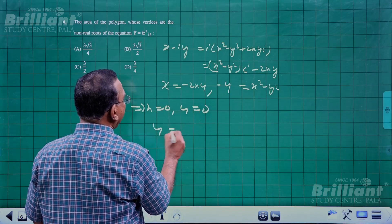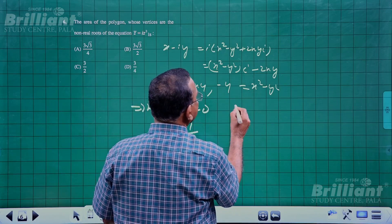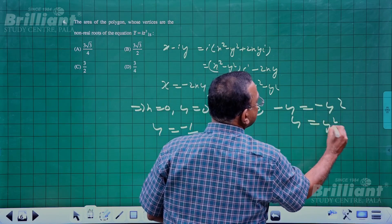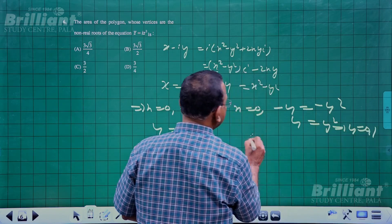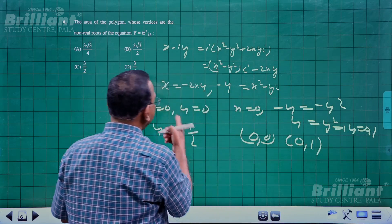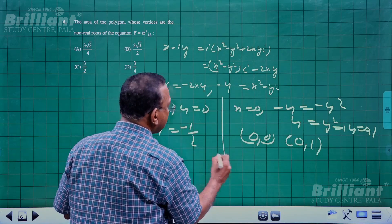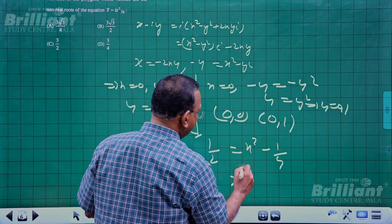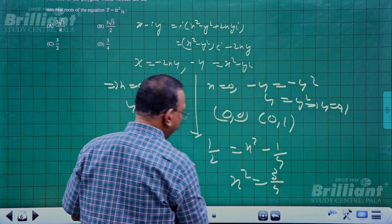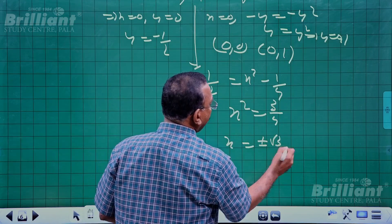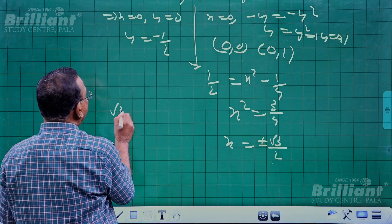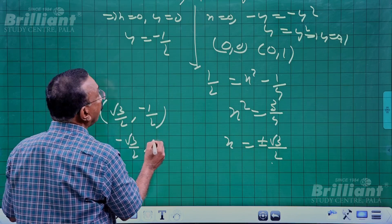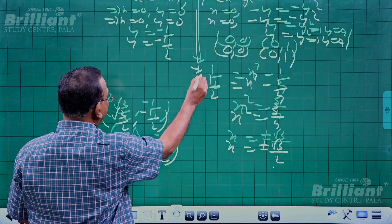From x = -2xy: x = 0 or y = -1/2. When x = 0: y = y² gives y = 0 or y = 1, so points (0, 0) and (0, 1). When y = -1/2: x² = 3/4, giving x = ±√3/2. The four candidate points are (0,0), (0,1), (√3/2, -1/2), (-√3/2, -1/2). Since (0,0) is real, the non-real vertices are (0,1), (√3/2, -1/2), (-√3/2, -1/2).